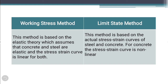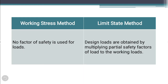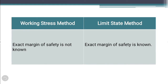In the Working Stress Method, safety is applied through the yield stress to permissible stresses. In the Limit State Method, partial safety factors are applied to the design loads and material strength values. Also, in Working Stress Method no factor of safety is explicitly used, whereas in the Limit State Method a factor of safety is used.